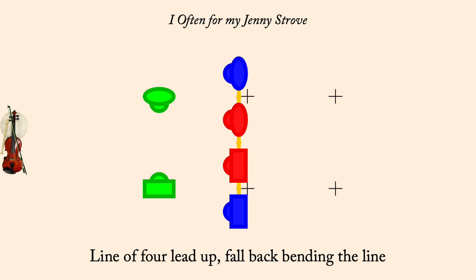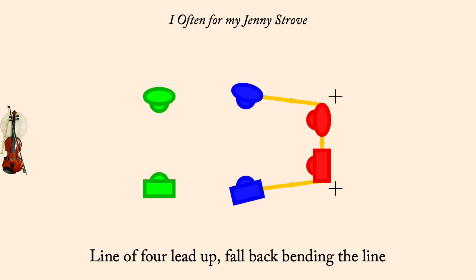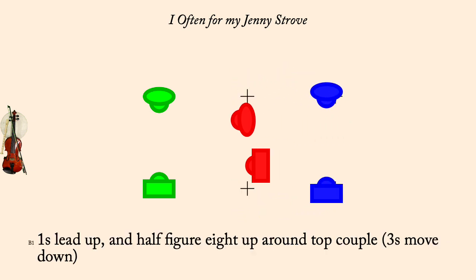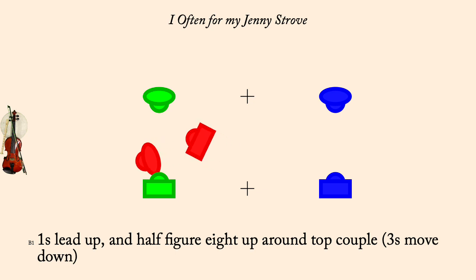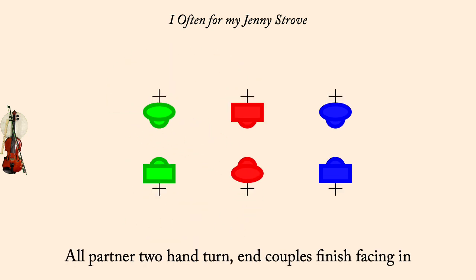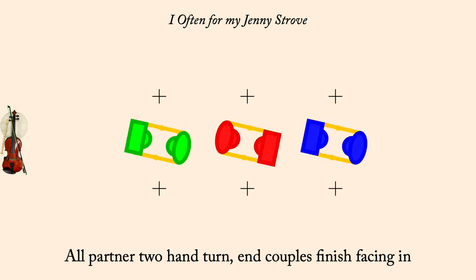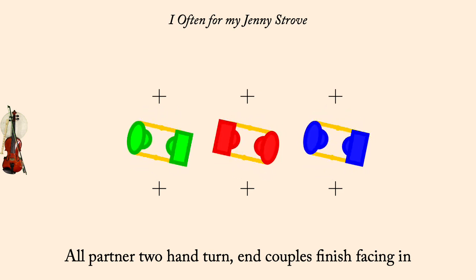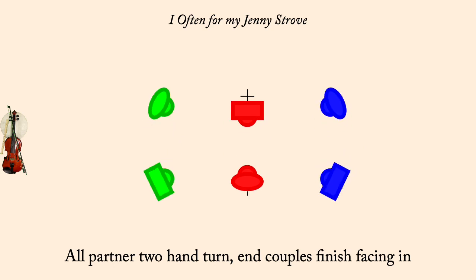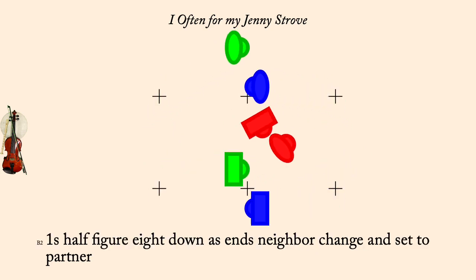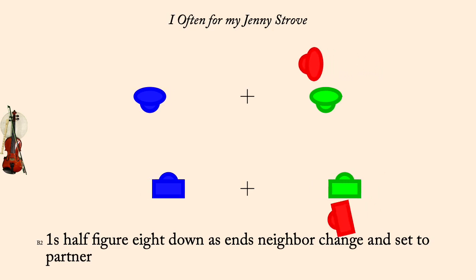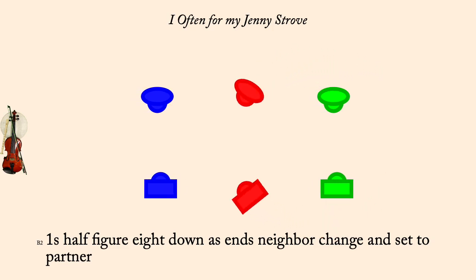Ones lead up and half figure eight through top couple as threes move down. All, partner two-hand turn. Ones half figure eight down as Ann's neighbor change and partner set. All, partner two-hand turn.